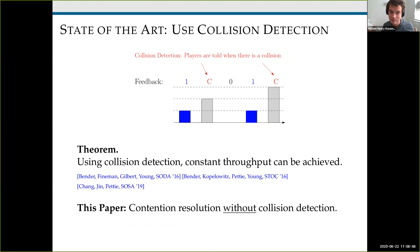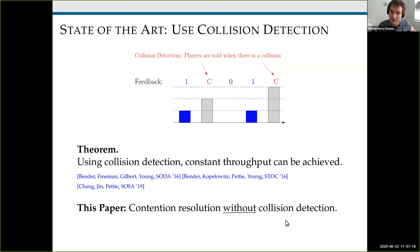With collision detection, the natural approach is: if you see a collision, decrease your probability of broadcasting in future steps; if you see a step where nobody broadcasted, increase your probability. If you do this in just the right way, you can solve contention resolution with constant implicit throughput. That was an elegant result from SOSA 2019. Our paper — Contention Resolution Without Collision Detection — solves the contention resolution problem on shared channels achieving constant implicit throughput with high probability, but without using collision detection.